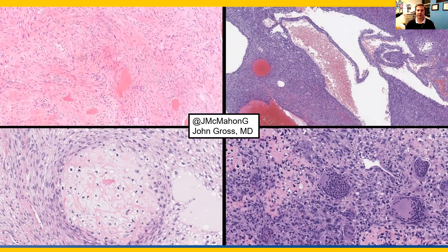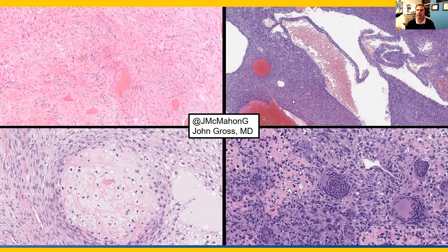Here is a collage of osteosarcoma subtypes. The top left shows a relatively bland, variably pleomorphic spindle cell sarcoma associated with a more well-formed bone — this is an example of fibroblastic osteosarcoma. The top right is an example of telangiectatic osteosarcoma with blood-filled cystic spaces and variably cellular and pleomorphic spindle cell sarcoma with large areas with fibrous septae. The amount of osteoid in telangiectatic osteosarcoma may be quite focal.